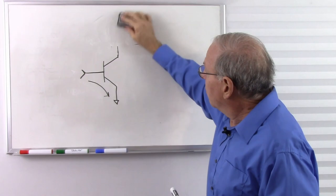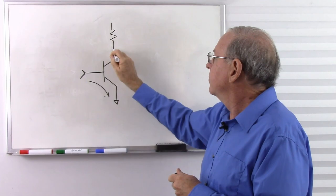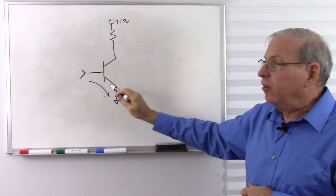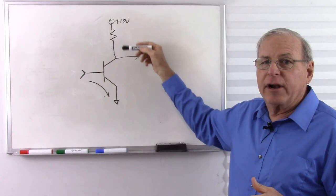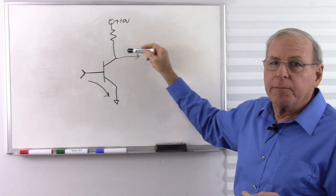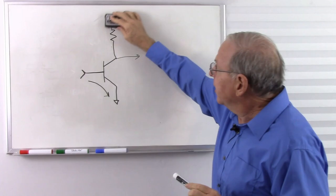Or I could have a collector resistor where manipulating this transistor manipulates the voltage at the collector. So basically, I can either have a current output or a voltage output, depending on whether I have a collector resistor or put the circuit in the collector.